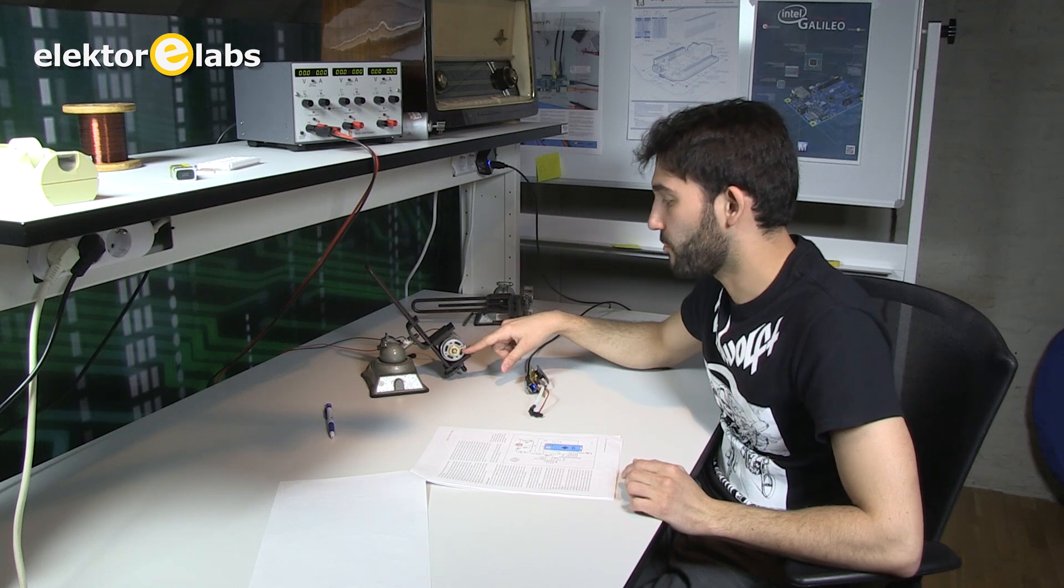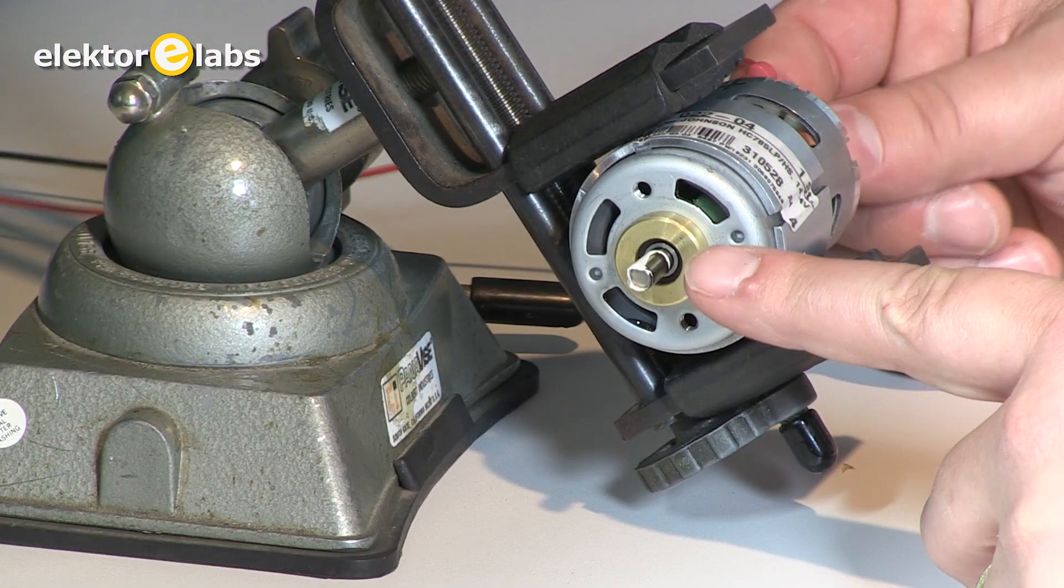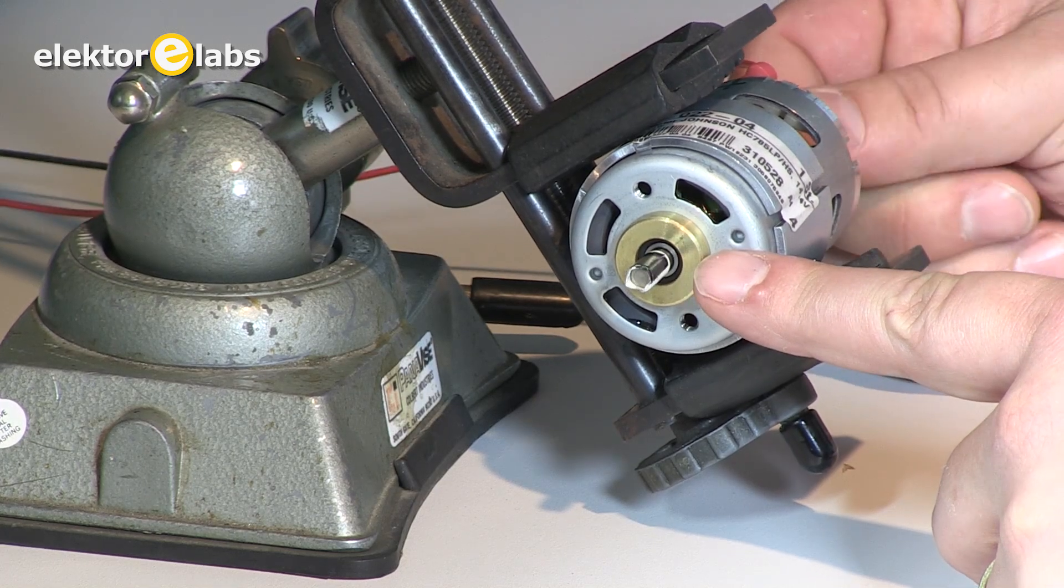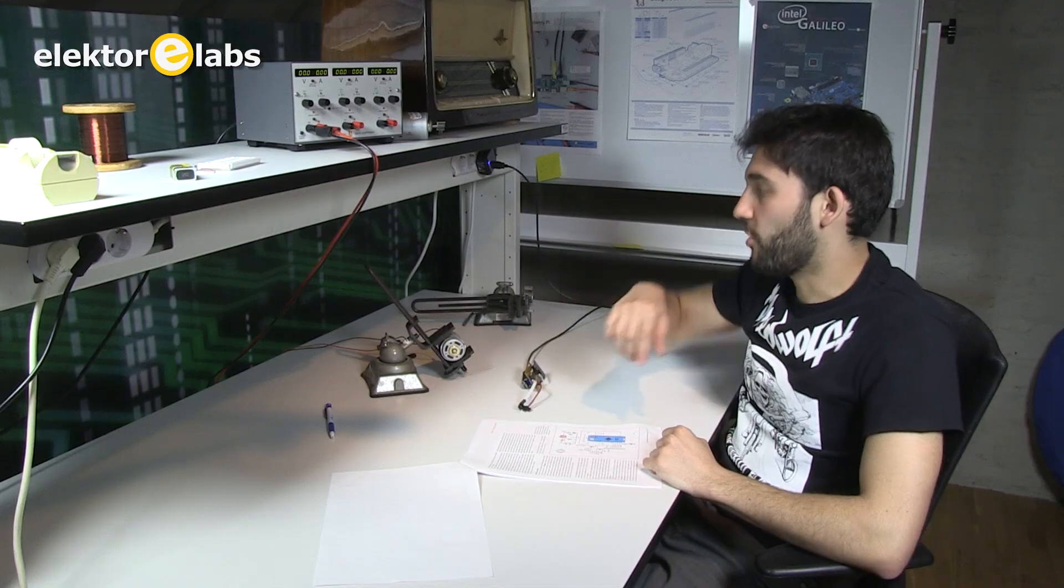In our rotor we have to put a small piece of black matte tape. The Arduino micro will be counting one when the optical sensor input goes from low to high.